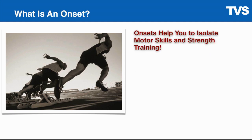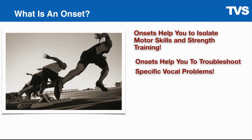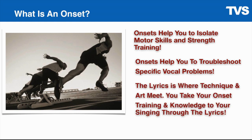Onsets help you to isolate your motor skills and build strength training. We have certain onsets that build strength for belting and singing in the head voice. We have certain onsets that help you with your respiration. We have certain onsets that help you with vocal fold closure — all kinds of things. When you learn these eight onsets, you have a bag of tools that you can use to fix your problems quickly. Onsets help you to troubleshoot specific vocal problems.